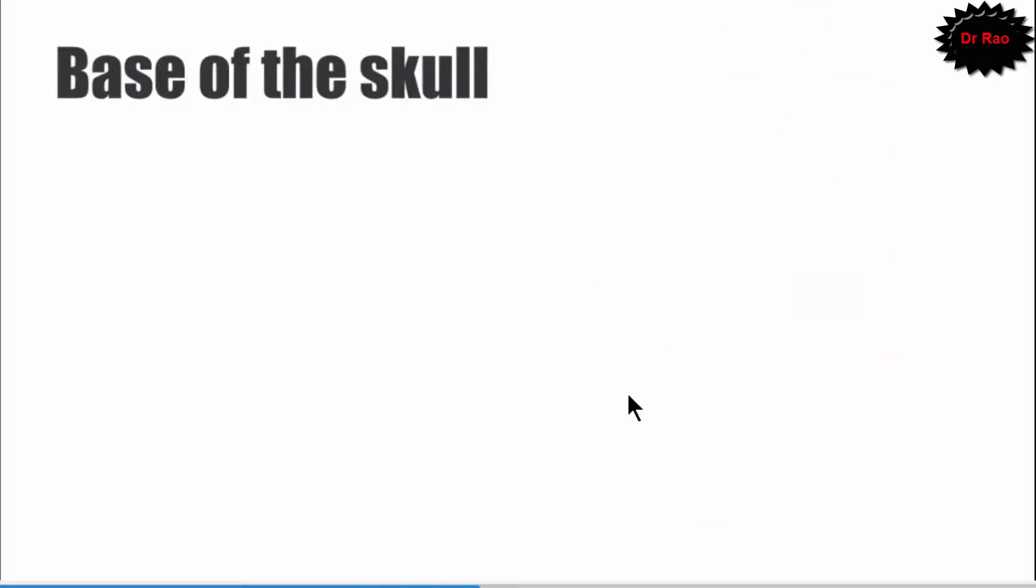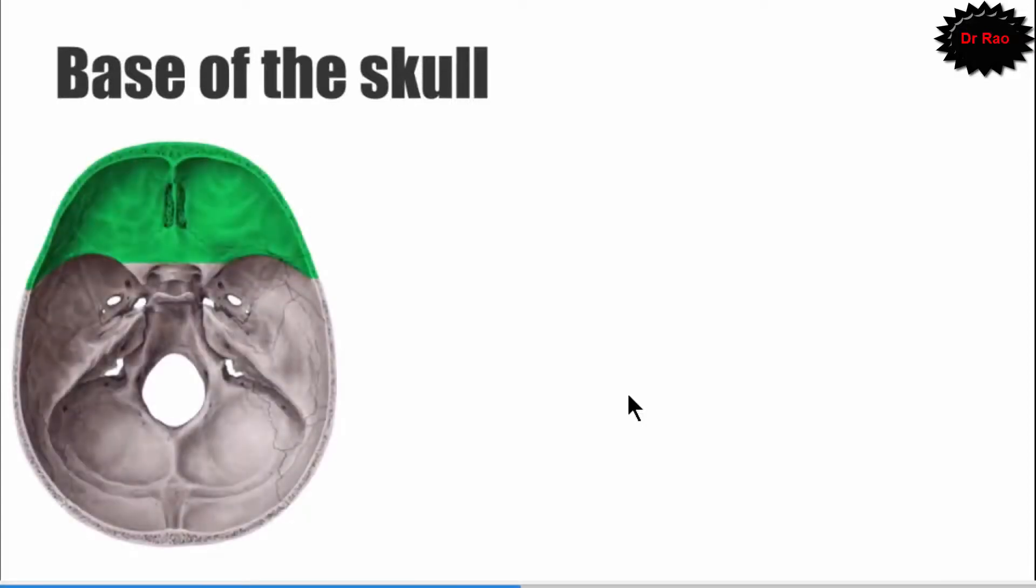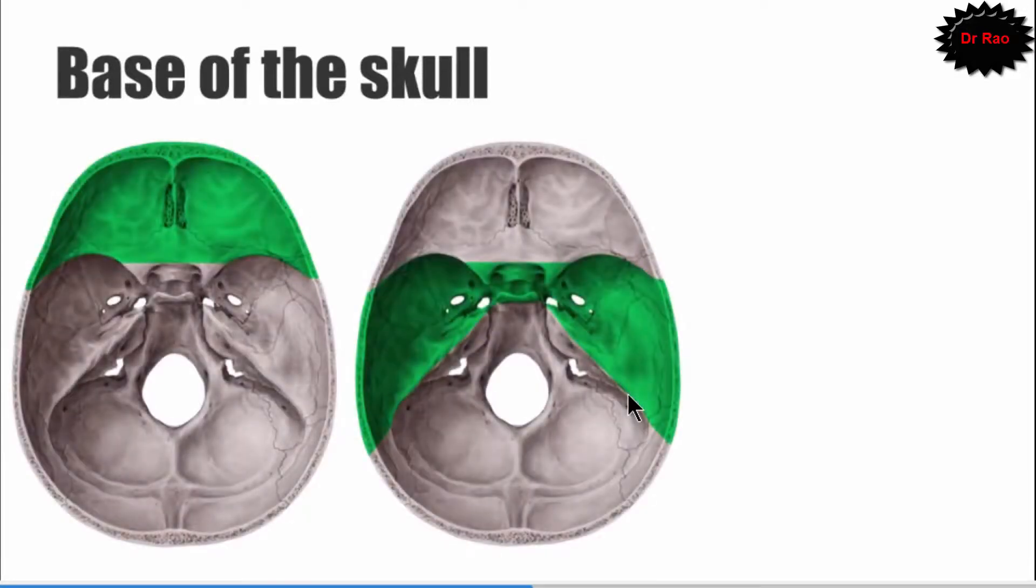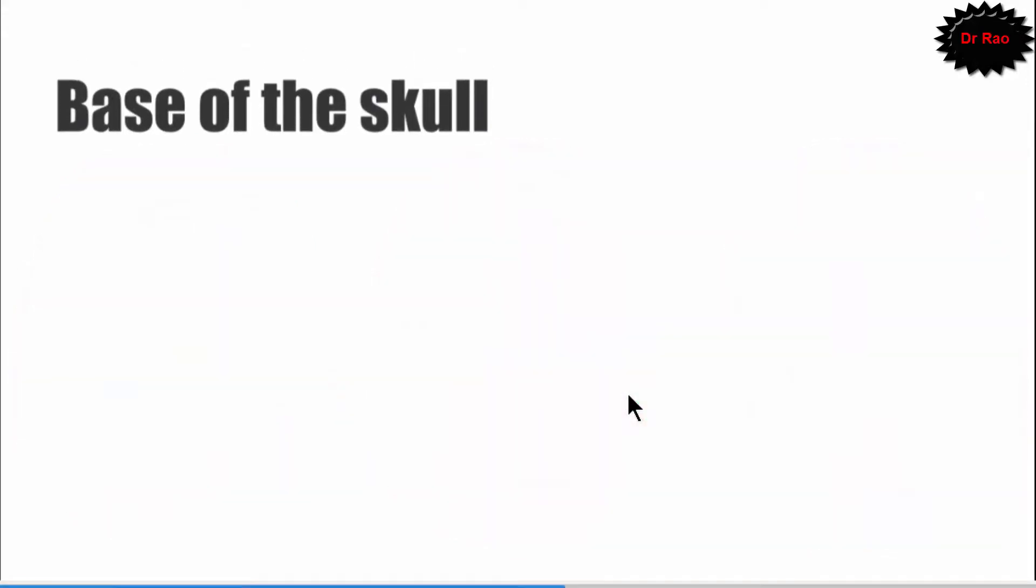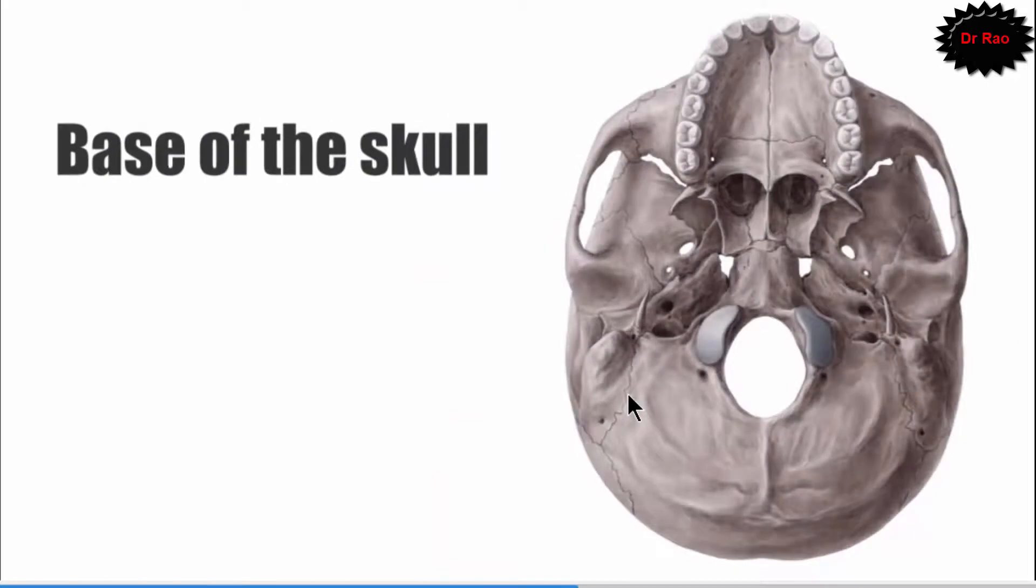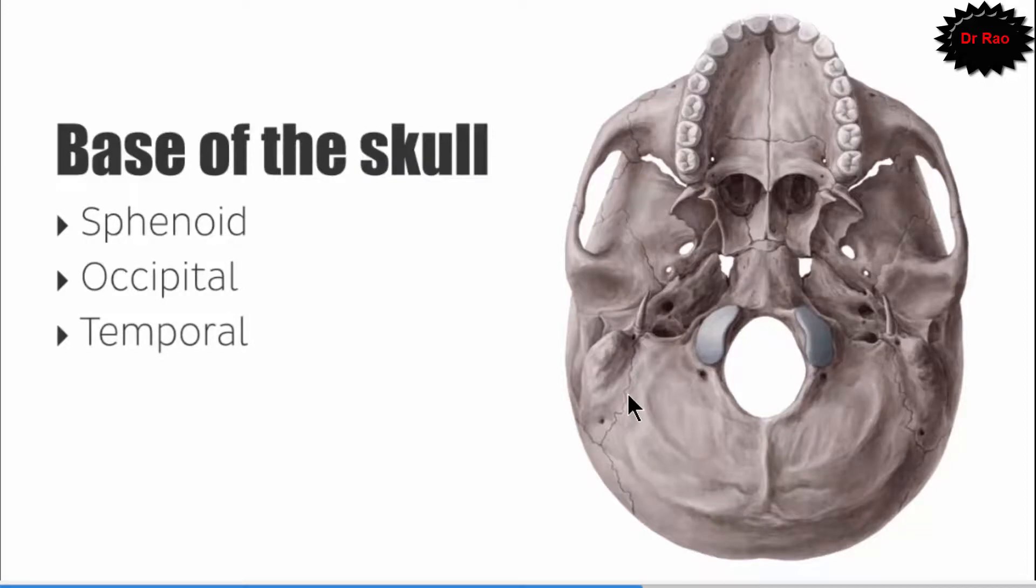Now we see the base of the skull from downward. If we see the skull, there's anterior, middle, and posterior. The base of the skull has many bones like sphenoid bone, occipital bone, temporal bone, maxilla, and zygomatic bone.